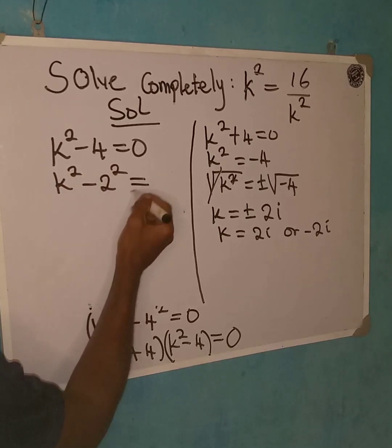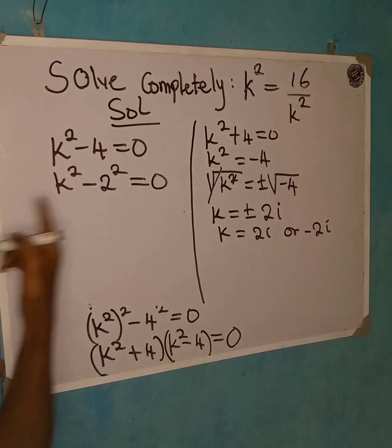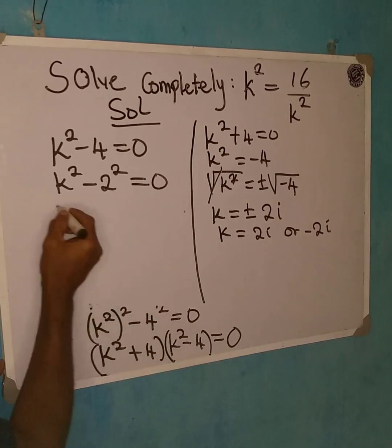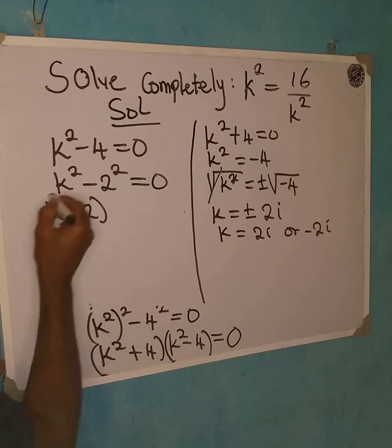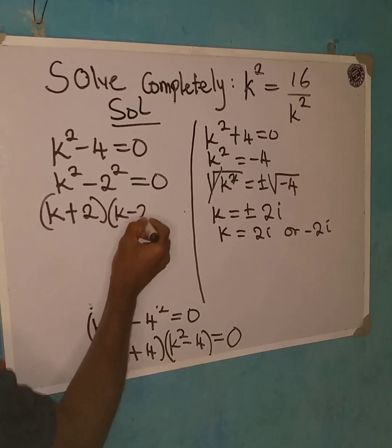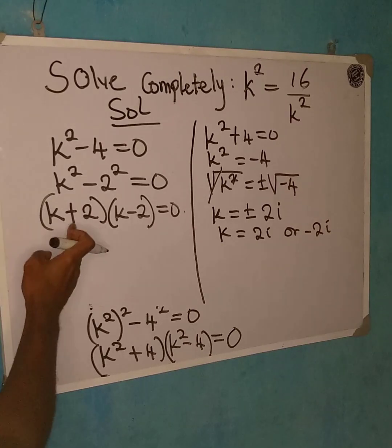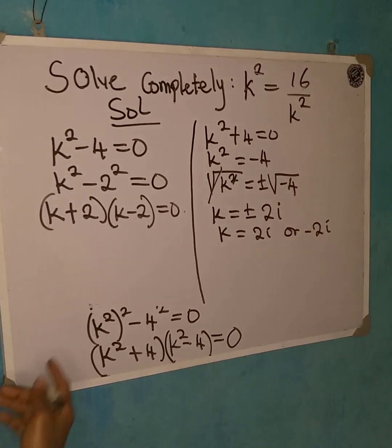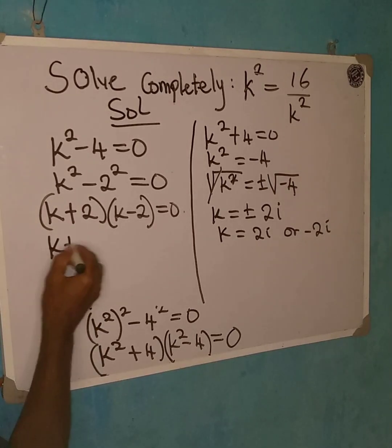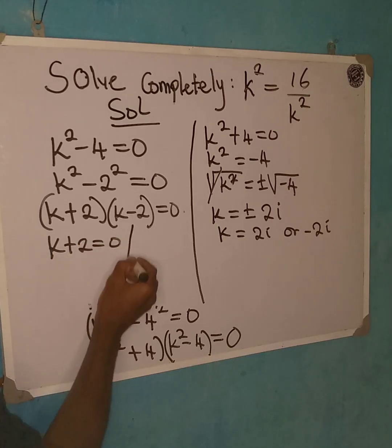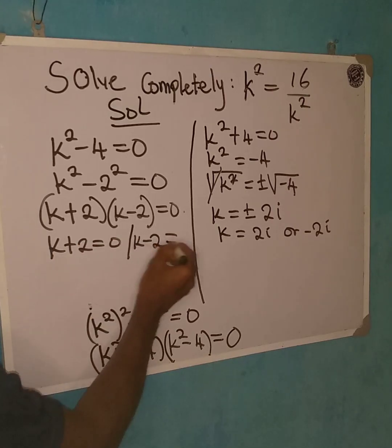And then I will do the same thing that I did before. So that we have k plus 2 into bracket k minus 2 equals 0. And then from here, I believe that either of them is equal to 0. So I'm going to have k plus 2 to be equal to 0 or k minus 2 to be equal to 0.